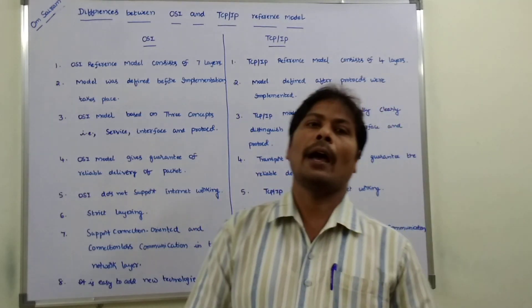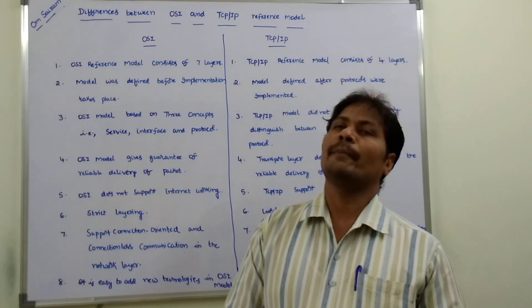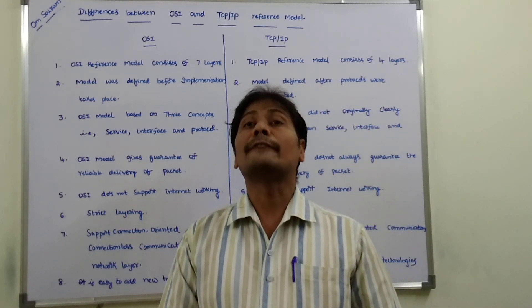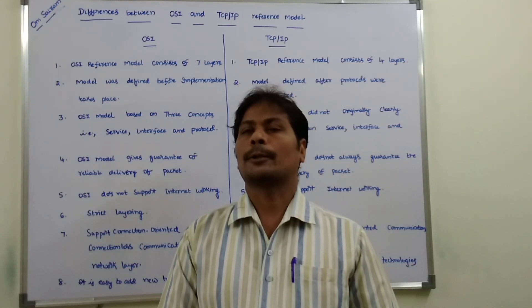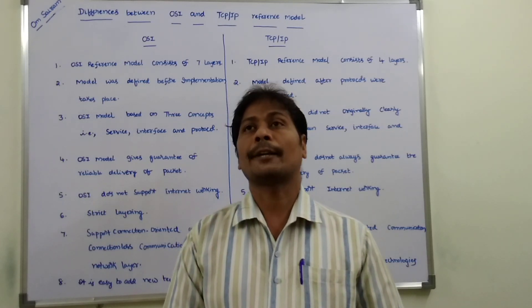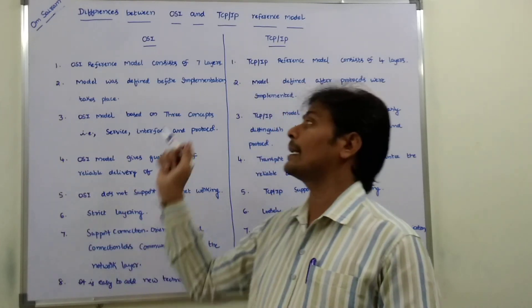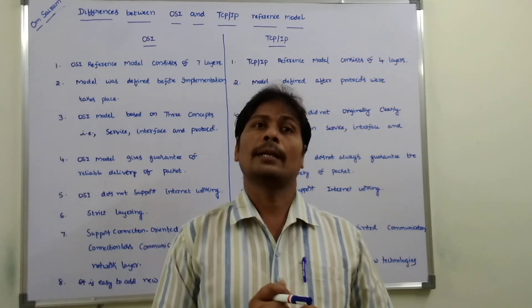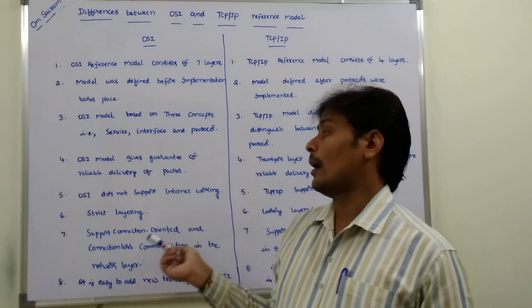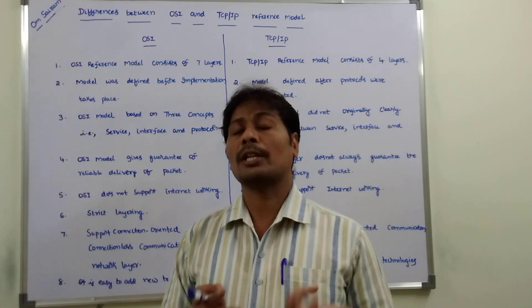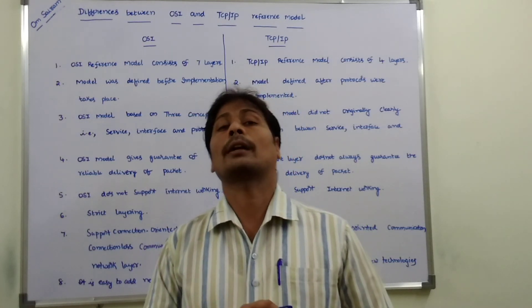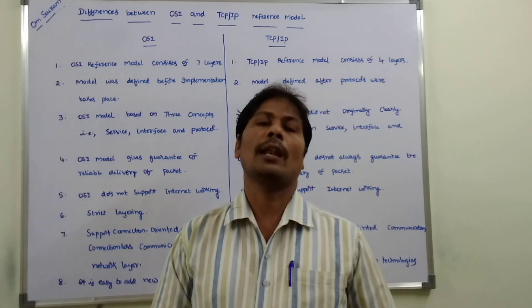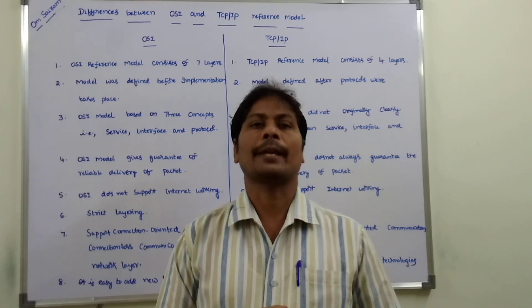The similarities between the OSI reference model and the TCP/IP reference model: both are reference models, and both consist of three components — service, interface, and protocol — though OSI clearly defines these three components while TCP/IP does not. Additionally, both TCP/IP and OSI reference models support connection-oriented and connectionless communications. Thank you for watching this video.